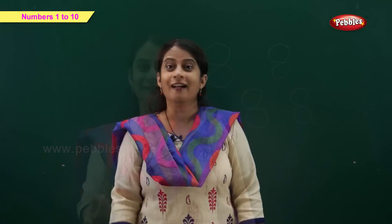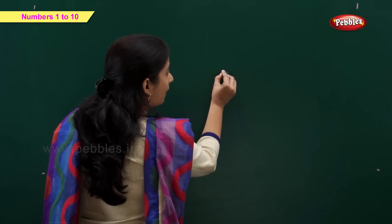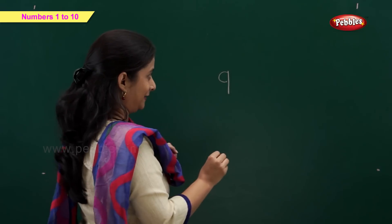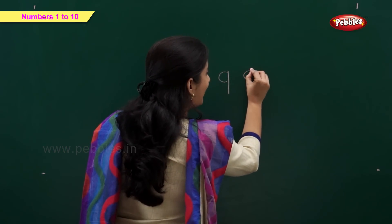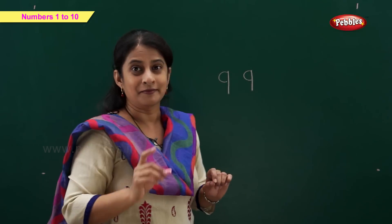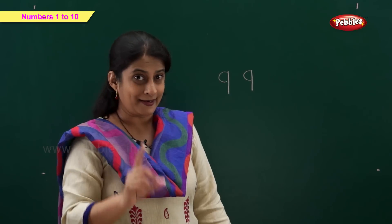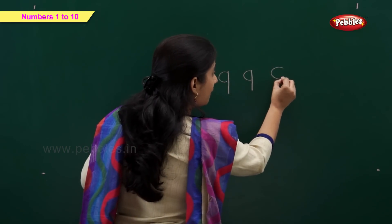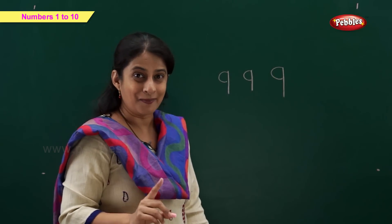Got it? And now it's time to write number 9. We just draw a curve and a standing line. A curve and a standing line makes number 9.